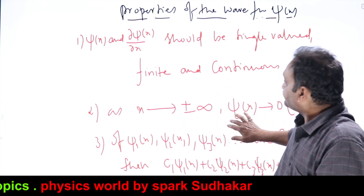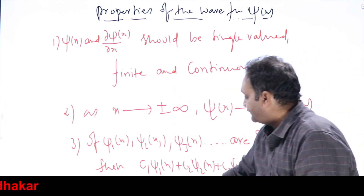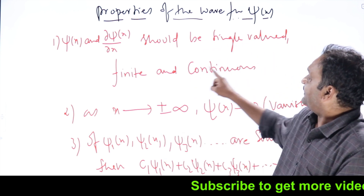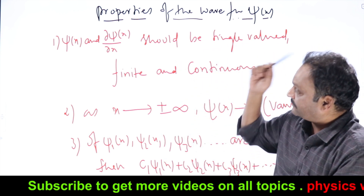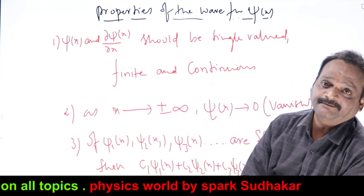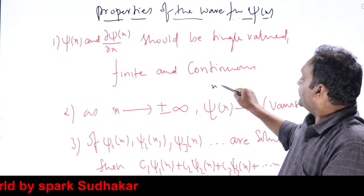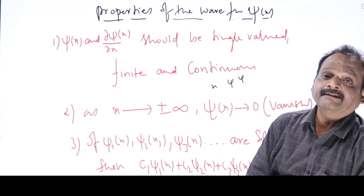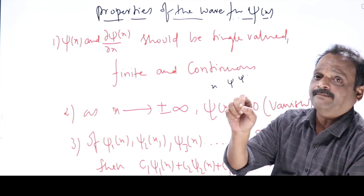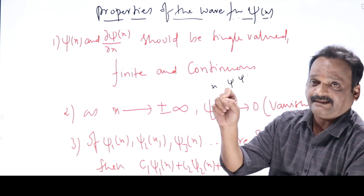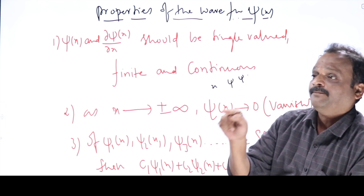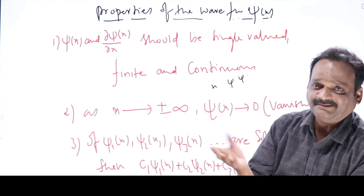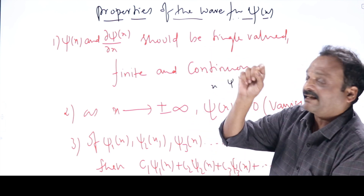The function should satisfy some conditions. The first one is that psi and dψ/dx should both be single-valued, finite, and continuous. Not only psi — at any value of x, psi should have one and only one value. If at some point psi has two values, psi and psi-dash, then from psi you would get two different momenta. At one point, at one instant, a single particle cannot have two different momenta — that is meaningless.